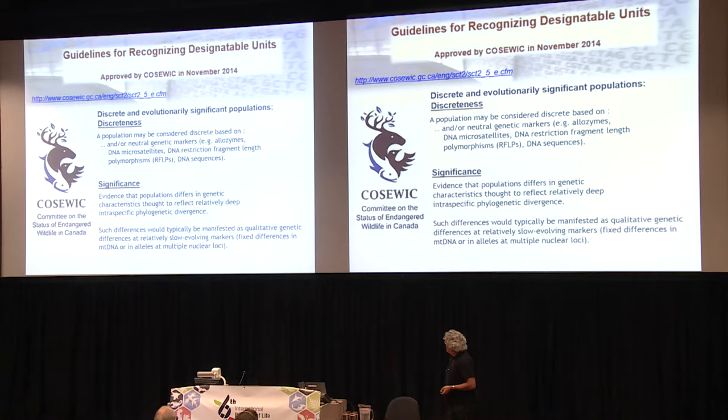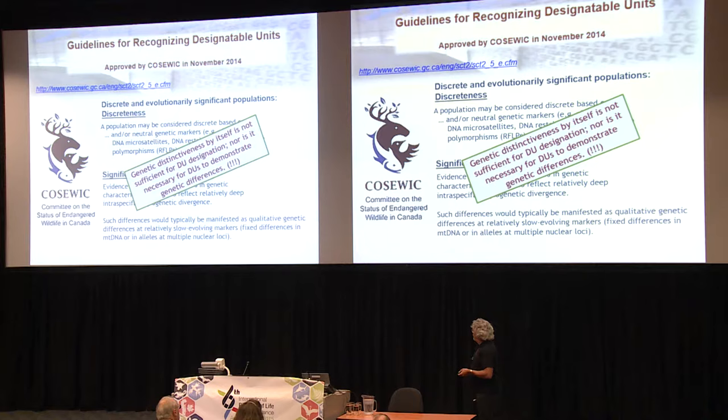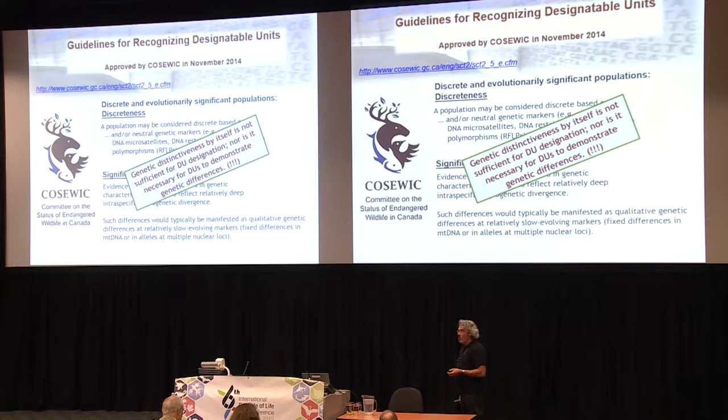It's even stated in the criteria that genetic distinctiveness by itself is not sufficient for designable unit designation, nor is it necessary for designable units to demonstrate genetic differences. So what's the role of genomics? It's not exactly totally clear. Something has to be changed, I guess.